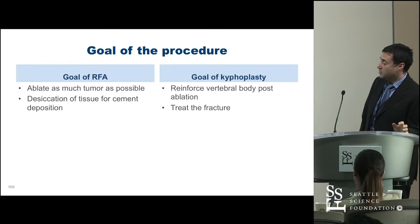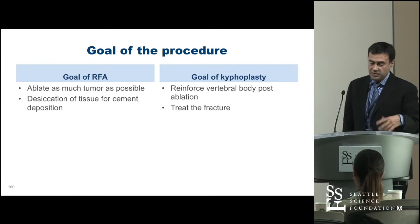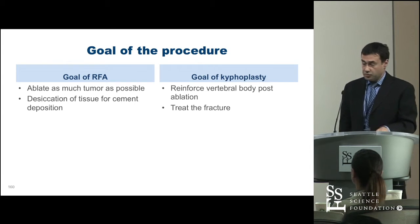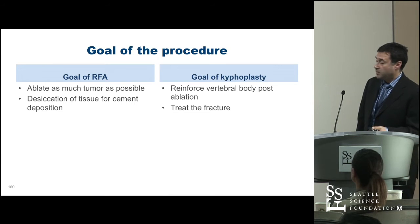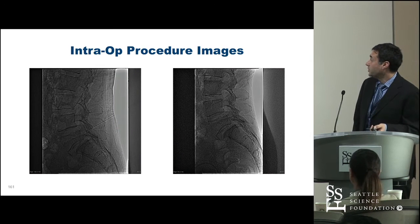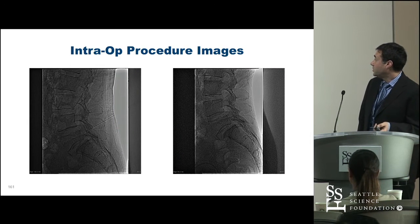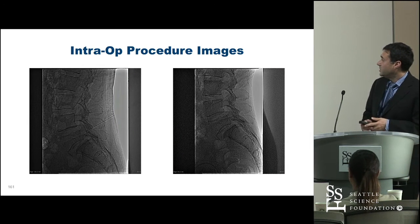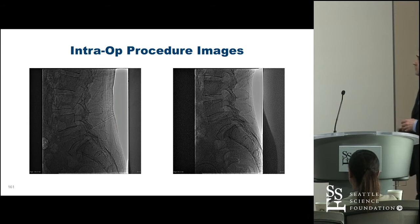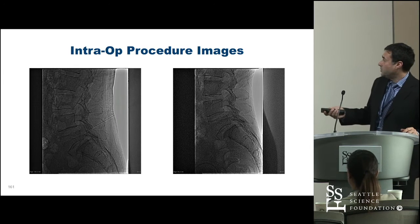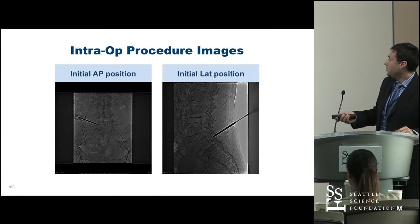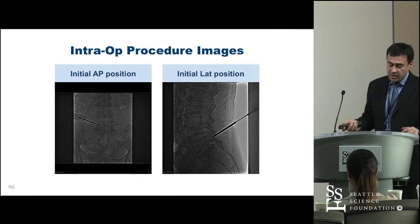The kyphoplasty part, after the RFA, is to reinforce the vertebral body and treat the fracture. This is a posterior, unipedicular approach shown on fluoroscopy.